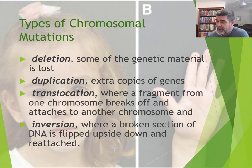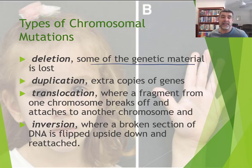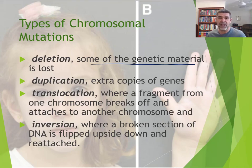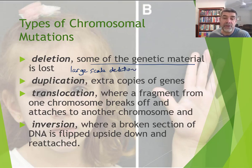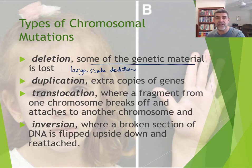The first type we look at is deletion, which is a loss of genetic material. A deletion resulting in the loss of one or two nucleotides will have a very different consequence to one on a much larger scale. This is a large-scale deletion — we're no longer just talking about one or two nucleotides missing, or even that perfect three missing as we saw in cystic fibrosis earlier.